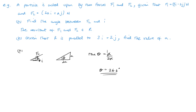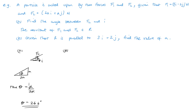That completes part a. For part b, the resultant of F1 and F2 is R, and we're told R is parallel to 3i plus 2j. We need to find the value of a. Since parallel vectors have the same direction angle, we first find R: adding F1 and F2 gives R equals (5 plus 2a)i plus (a minus 2)j.